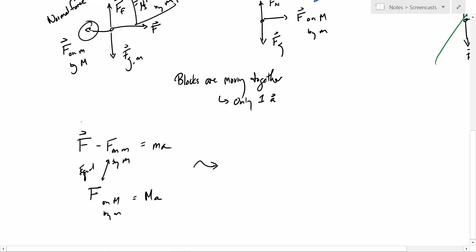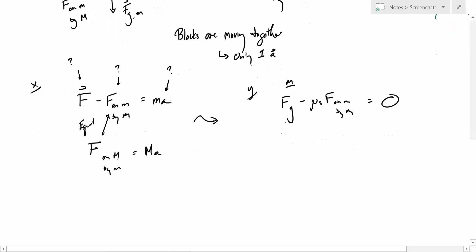I have too many unknowns right now, don't I? Oh, no I don't. Okay. So the problem is, I don't know what this is. I don't know what this is. I don't know what this is. But I also have to look in the y direction. And if I look in the y direction, I see, on little m at least, that Fg minus mu s F on m by M is equal to zero. This is the whole not falling down condition that we're interested in.